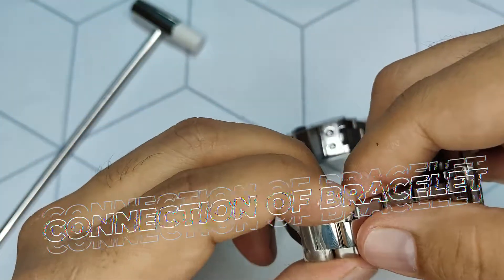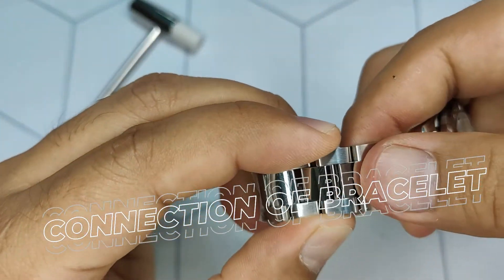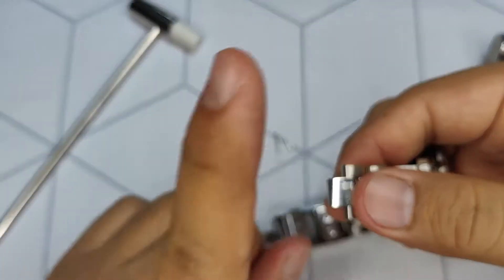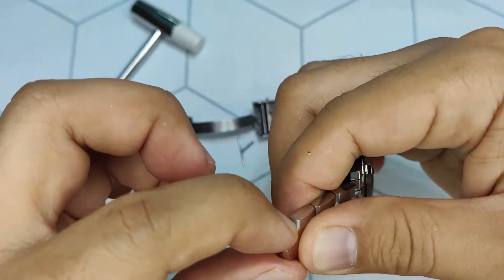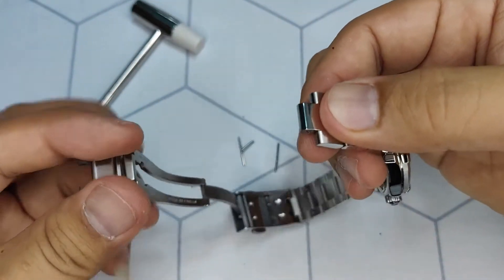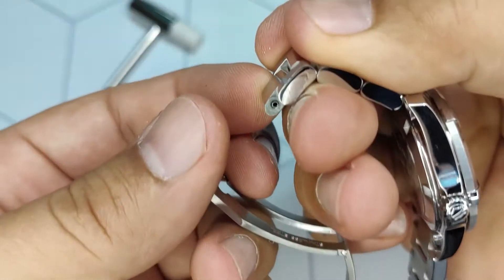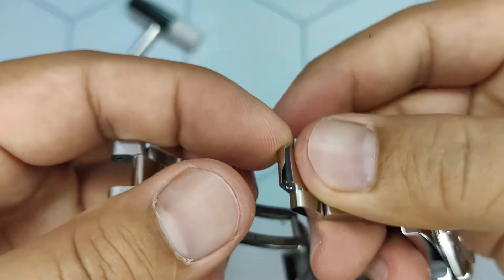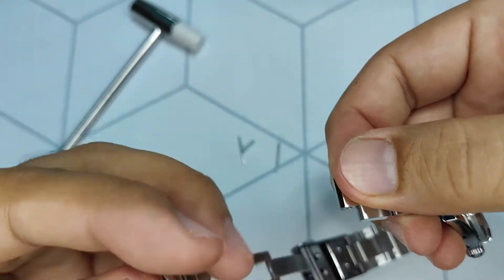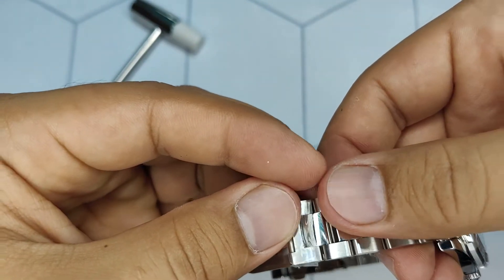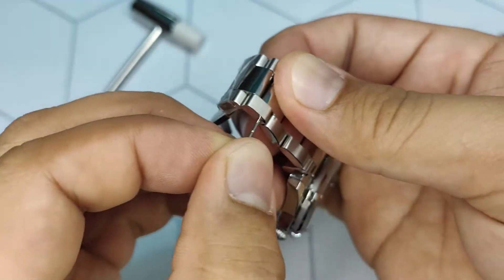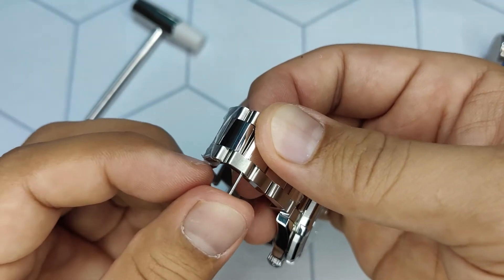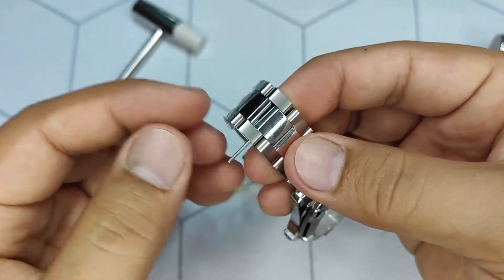Now it's time to connect the bracelet. First, insert the barrel to the inner link. Align the two links and insert the pin either way. Be sure that the pin is totally inserted through the other end before proceeding with the hammering.